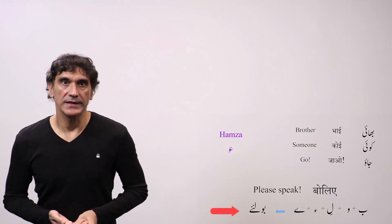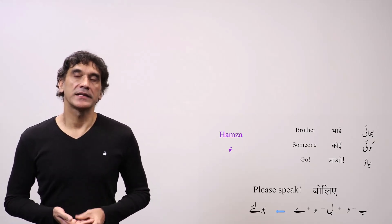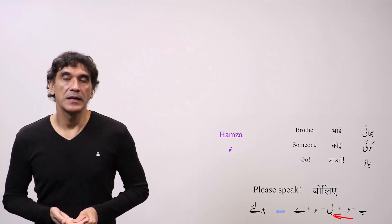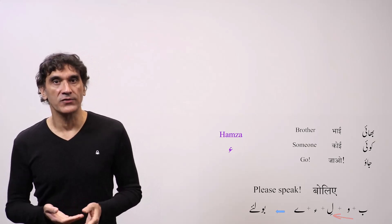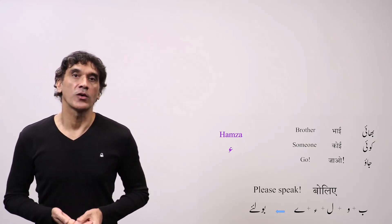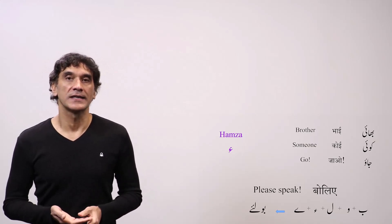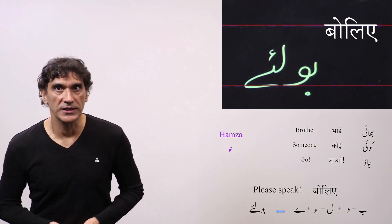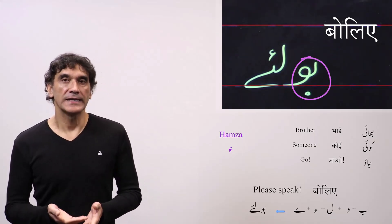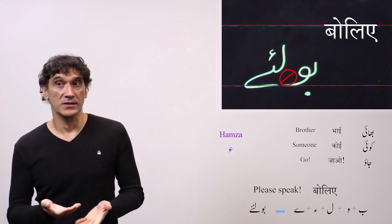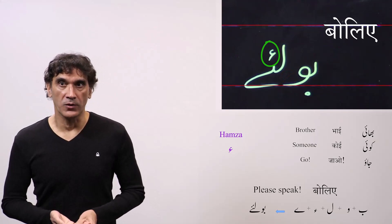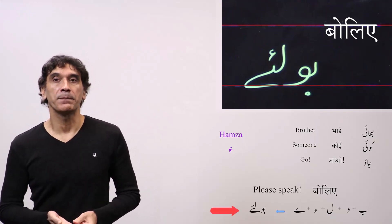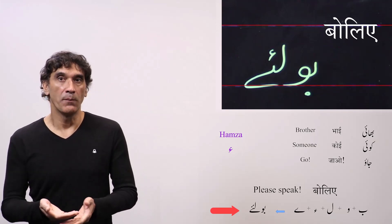The last word is Boliye, the Aap imperative form of the verb Bolna, meaning 'to speak.' Here the two vowels in a row are short E and A. The short E in Urdu is represented by the short vowel Zer, but as the short vowels Zabar, Zer, and Pesh are not written, the short vowel Zer will not be written here either. Only Hamza on Ye shows that there is a short E before Ye. The spelling is Be plus Vav plus Lam plus Hamza plus Badi Ye. Be plus Vav makes Bo. Lam will not connect to Vav because Vav is non-connected, but the Sosha for Hamza will be connected to Lam on one end and to Badi Ye on the other to make Liye. So Bo plus Liye: Boliye.